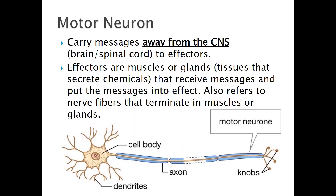It's worthwhile noting that there are different types of nerve cells throughout your body. The one I just showed you most closely resembles a motor neuron. These neurons carry messages away from your central nervous system — from your brain through your spinal cord and into your effectors, which are muscles or glands that receive messages and put your brain's commands into effect, such as secreting hormones or contracting your leg muscles to allow you to walk.